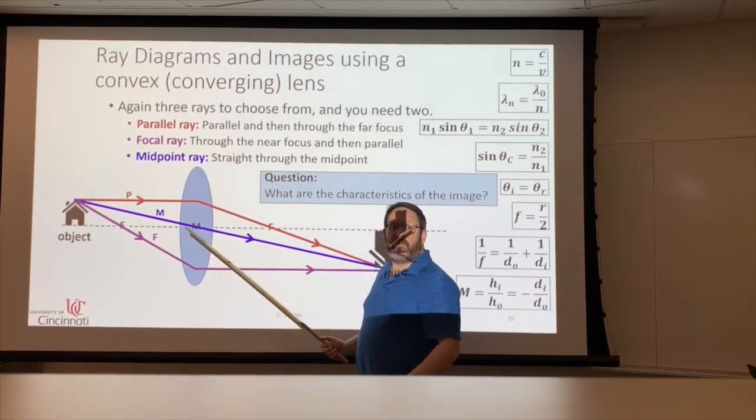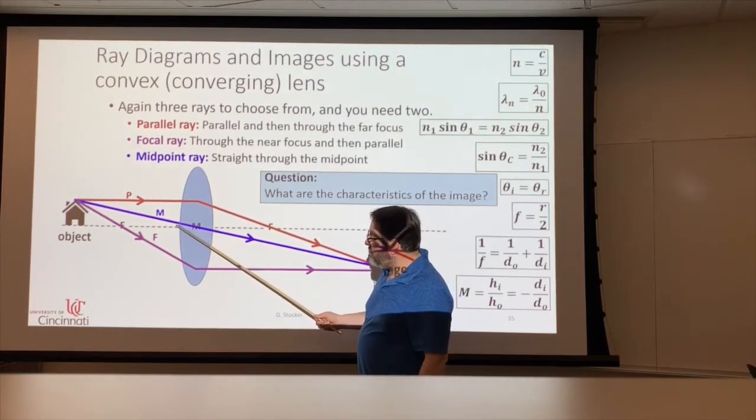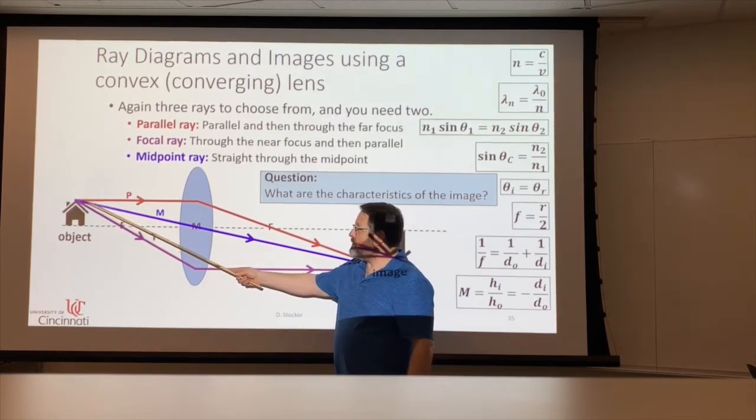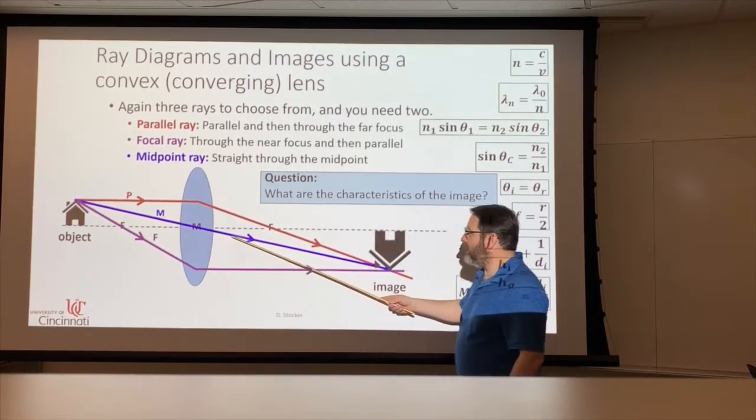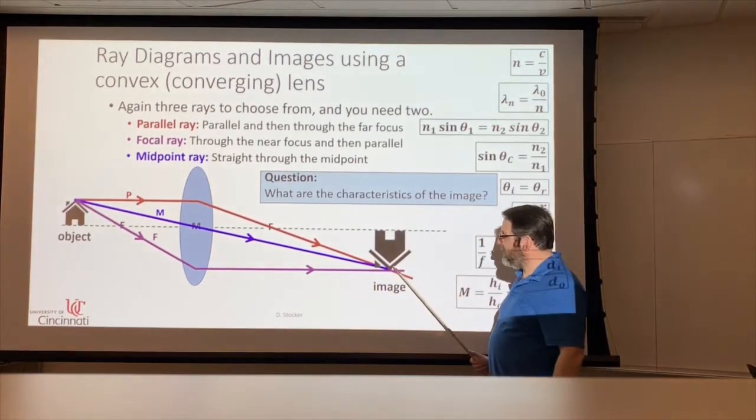And if you remember, the light that went straight through the center of the lens didn't get turned at all. So the light that passes through the middle just goes straight through. So those two are enough by themselves to get you to this image.